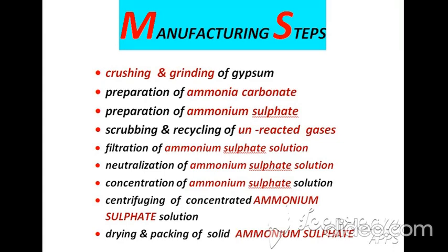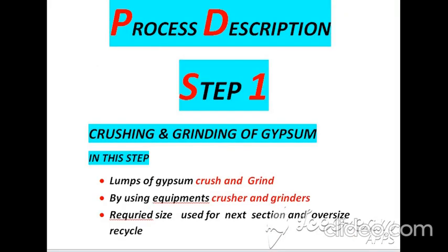In the manufacturing process of ammonium sulphate, nine manufacturing steps are involved. The first is crushing and grinding of gypsum; second is preparation of ammonium carbonate; third is preparation of ammonium sulphate; fourth is scrubbing and recycling of unreacted gases; fifth is filtration of ammonium sulphate solution; sixth is neutralization; seventh is concentration; eighth is centrifuging of concentrated ammonium sulphate solution; and the ninth is drying and packing of solid ammonium sulphate.